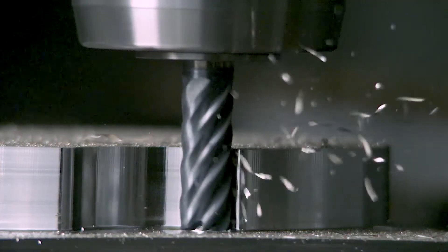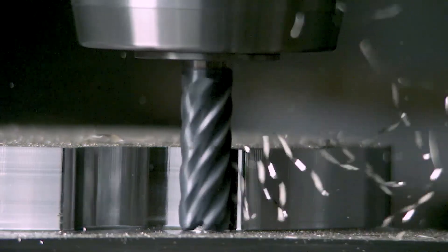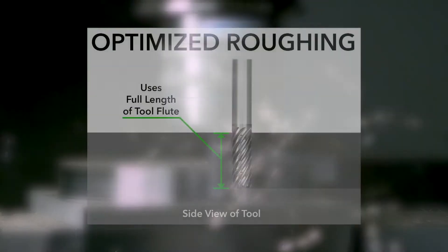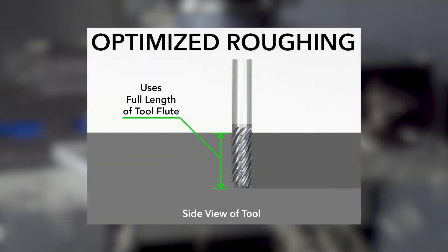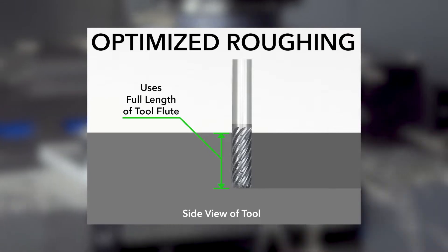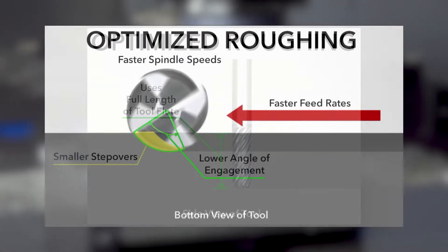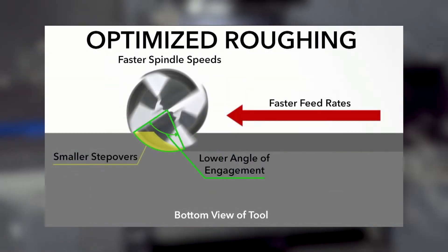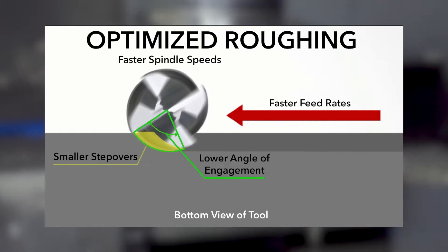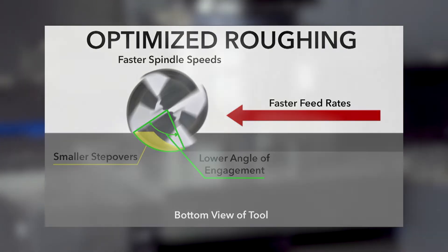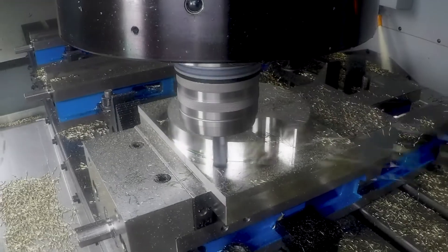So if you buy an end mill that has an inch of flute length, you want to make sure you're using that entire inch of flute length, but also controlling your radial stepover. Radial stepovers with optimized roughing, depending on the material, are probably between eight and ten percent. As those materials get harder to machine, the stepovers will reduce.